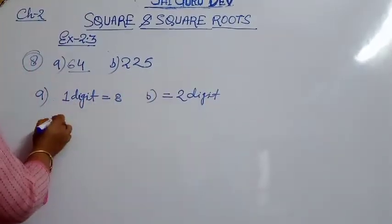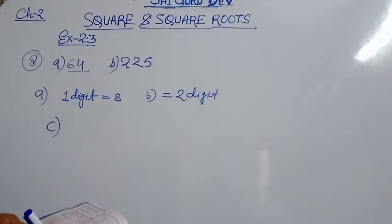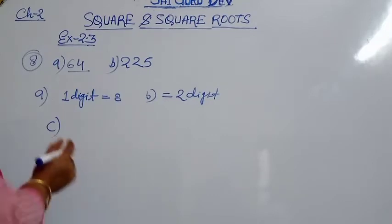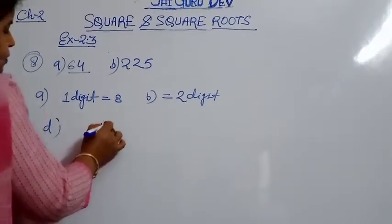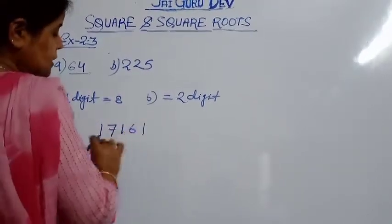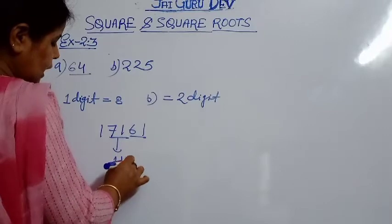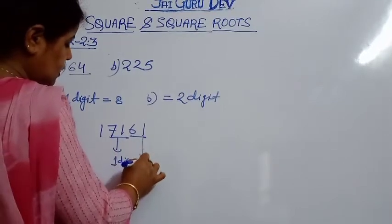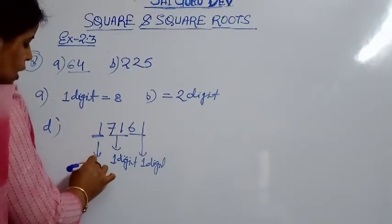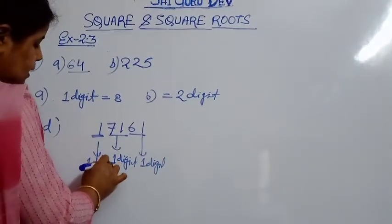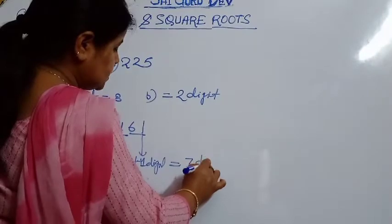Just understand part D — you will do part C yourself. For 17161, start pairing from the right: one digit for the first pair, one digit for the second pair, and one digit for the remaining single digit on the left. One plus one plus one — that gives three digits in the square root.